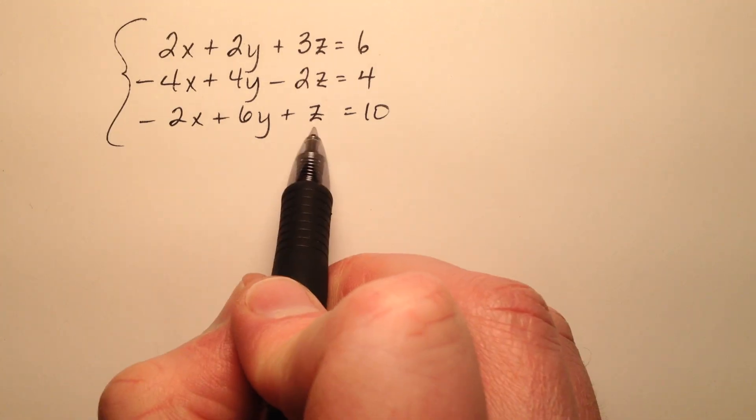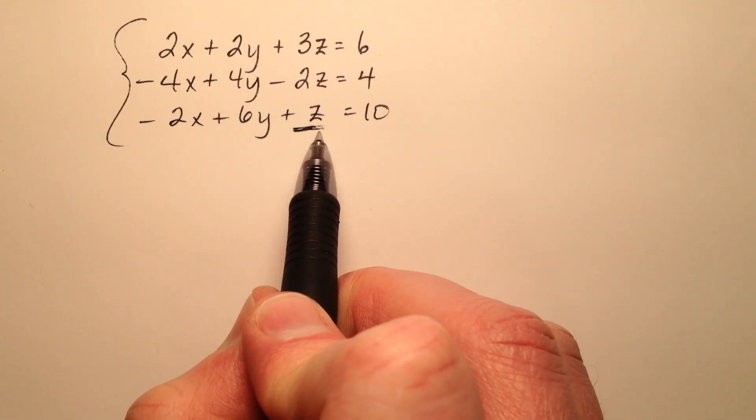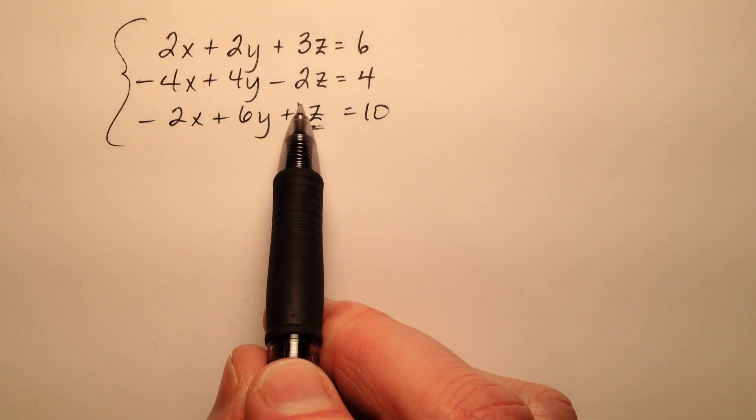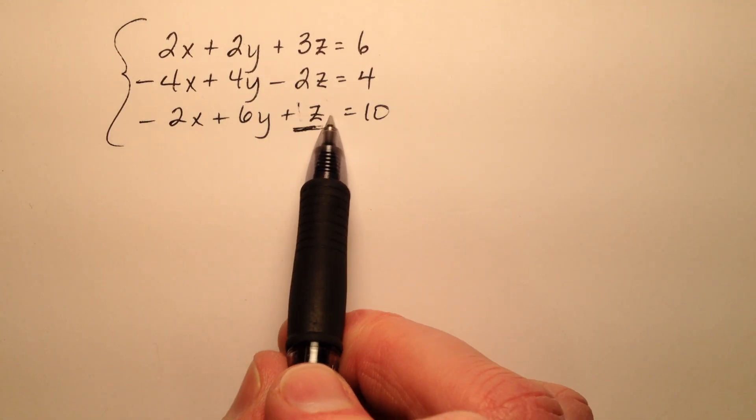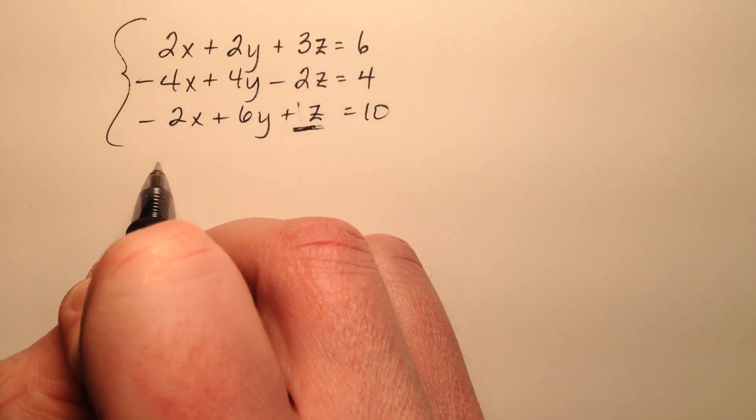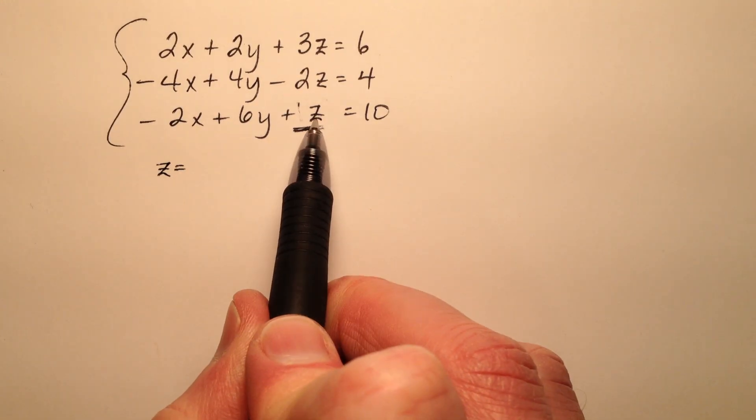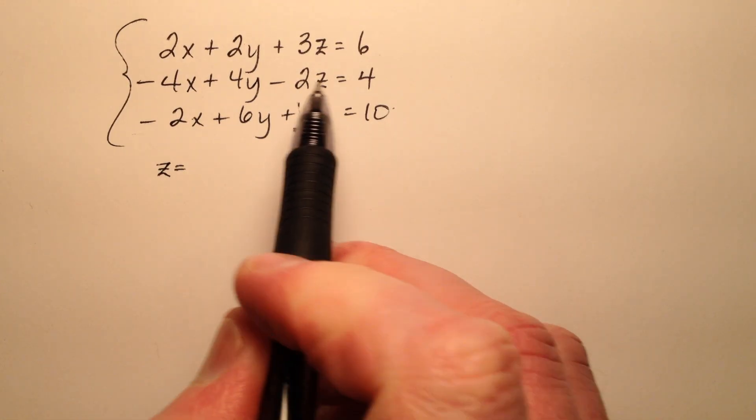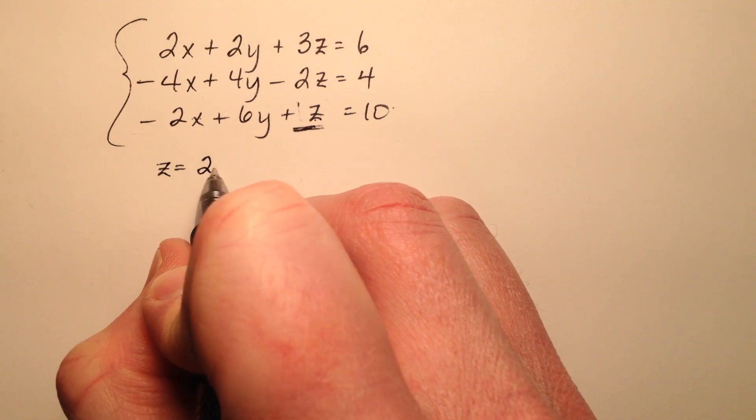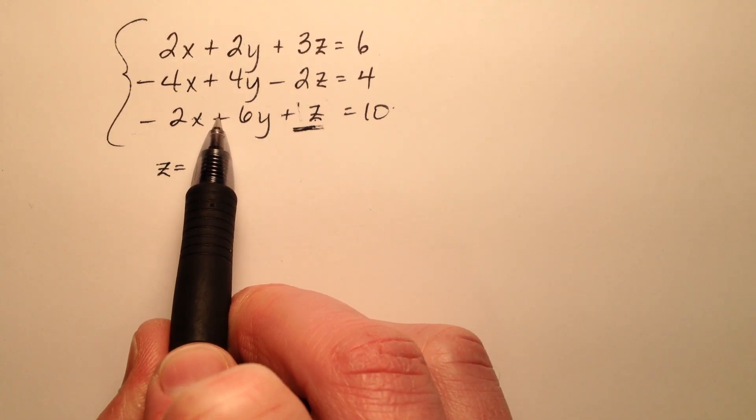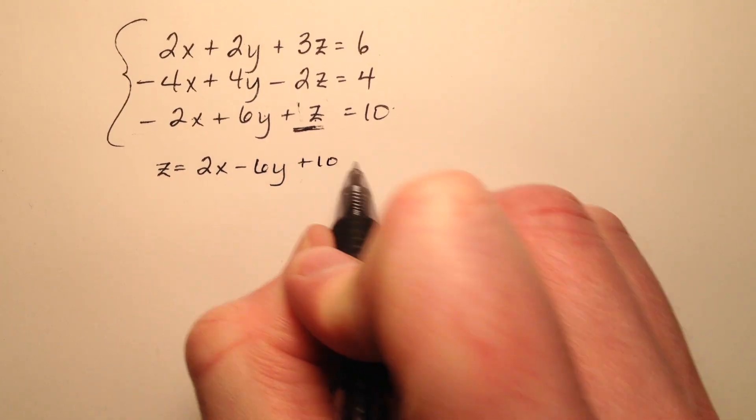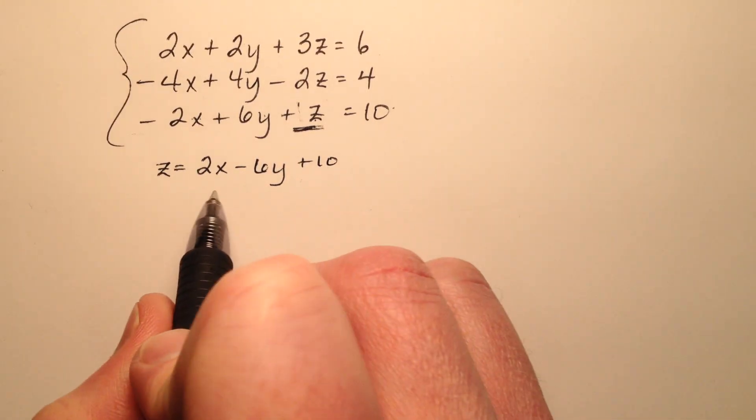So I notice in this third equation, this z variable right here has a coefficient of a positive one, so it's going to be easy to isolate or solve for z. So z equals, now I need to get these other two terms from the left side to the right side. This negative 2x will be a positive 2x, this positive 6y will be negative 6y, and then we have this positive 10 that's already over there.